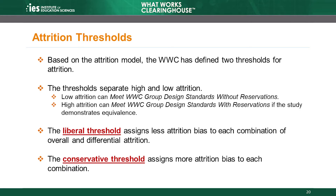Now, let's turn to the attrition thresholds established by the WWC. The thresholds identify combinations of overall and differential attrition that separate what the WWC defines as high and low attrition. The attrition model identifies the expected bias for each combination. The WWC uses this model to define two thresholds for attrition: a liberal threshold and a conservative threshold.